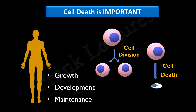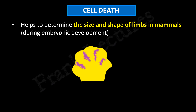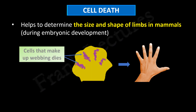Let's look at some prominent examples where cell death plays significant roles. The first example is where cell death helps determine the size and shape of limbs in mammals. At the early stage of development, mammalian embryos have webbed fingers and toes. This image represents the embryonic region that will develop into fingers, which is indistinct and without any space between the tissues that will become fingers. Later, during development and morphogenesis, the cells that make up the webbing die. So cell death plays an important role in sculpting human hands and feet during embryonic development, and similarly in shaping tissues and organs.